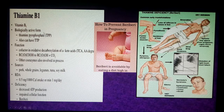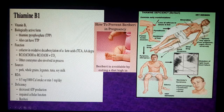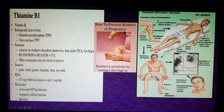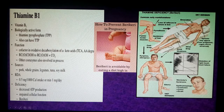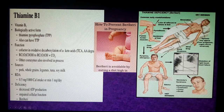Vitamin B1, thiamine: the biologically active form serves as a co-factor in metabolism and oxidative decarboxylation. Sources include pork, whole grains, and legumes. The recommended daily dose is 0.5 mg per 1000 kilocalories. Deficiency causes decreased ATP production, impaired cellular function, and beriberi — historically famous as Wernicke syndrome — presenting with edema, heart failure, foot drop, loss of deep reflexes, and paresthesia. In childhood it presents as edema, leg swelling, and tachypnea.